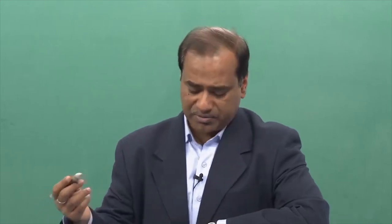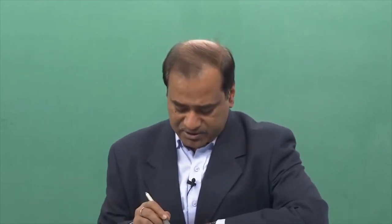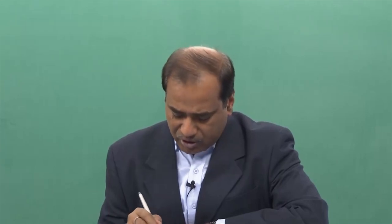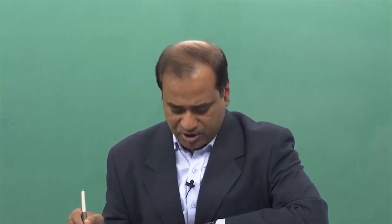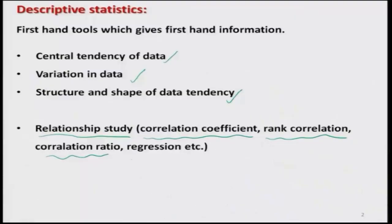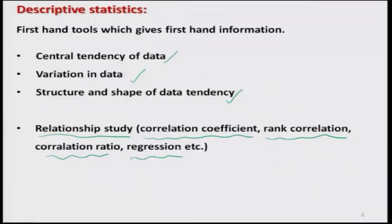In order to study the relationship there are different types of tools available in statistics: one is correlation coefficient, rank correlation, correlation ratio, regression and so on. But here our objective is not just to study the statistics — we are here to show you that those statistical tools can be computed and used through the R software.